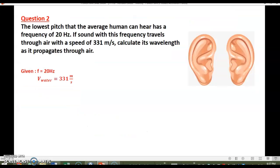Question two. The lowest pitch that the average human can hear has a frequency of 20 hertz. If sound with this frequency travels through air with a speed of 331 meters per second, calculate its wavelength as it propagates through air.